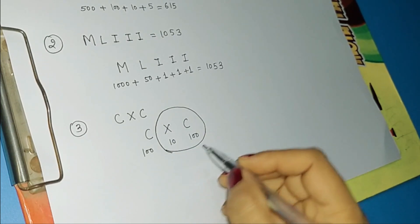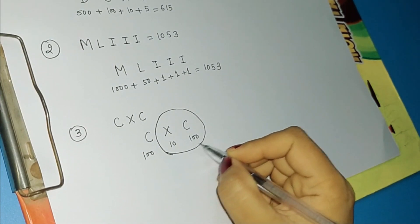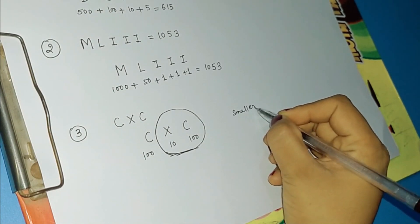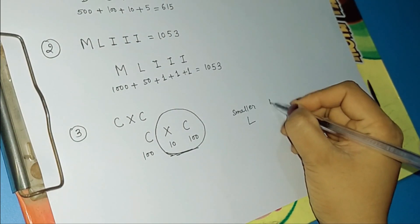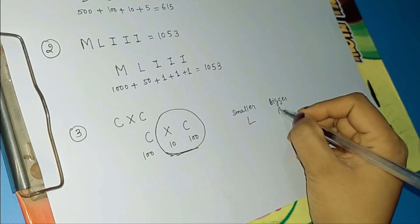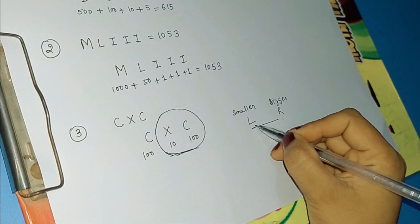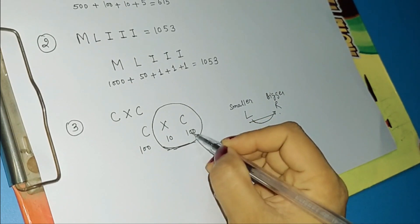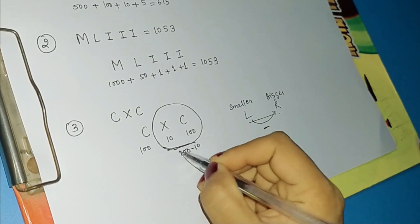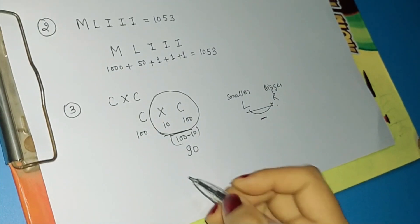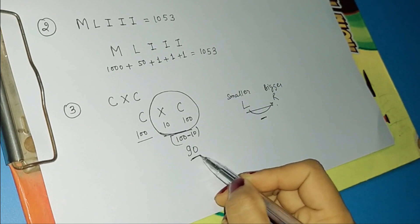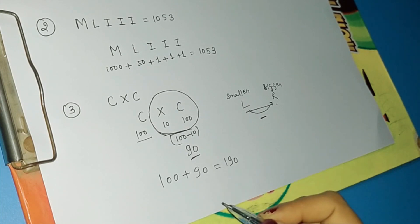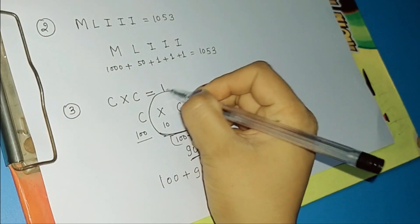We circle XC and eliminate those terms. According to Roman numeral rules, when a smaller number is on the left of a bigger number, we subtract the smaller from the bigger. So here 100 minus 10 equals 90. Now we add: 100 plus 90 equals 190. So CXC is equivalent to 190.